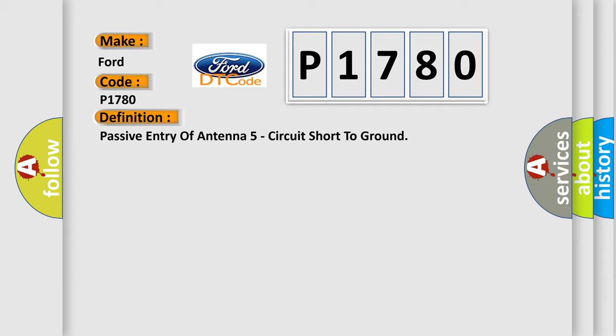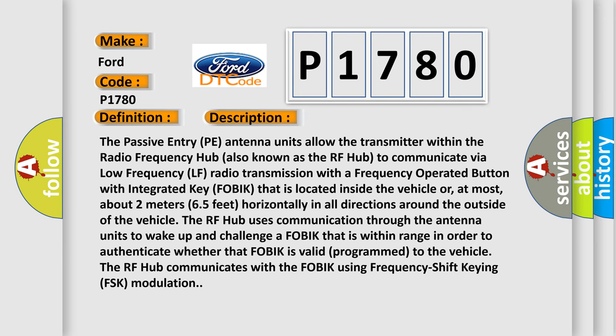The passive entry (PE) antenna units allow the transmitter within the radio frequency hub, also known as the RF hub, to communicate via low-frequency (LF) radio transmission with a frequency-operated button with integrated key (FOBIK) that is located inside the vehicle or at most about 2 meters (6.5 feet) horizontally in all directions around the outside of the vehicle. The RF hub uses communication through the antenna units to wake up and challenge a FOBIK within range in order to authenticate whether that FOBIK is validly programmed to the vehicle. The RF hub communicates with the FOBIK using frequency shift keying (FSK) modulation.